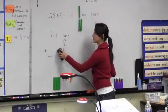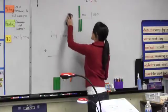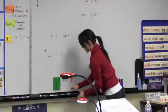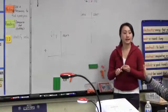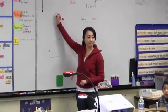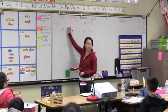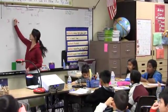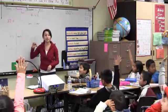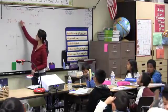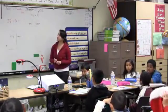Let's do another one. Can someone raise their hand and give me a two-digit number to add? Thirty-seven. Plus a one-digit number — Daniel? Five. Alright, thirty-seven plus five. I wonder if I will need to regroup here. Let's see — thirty-seven plus five. I'm going to start by building thirty-seven.